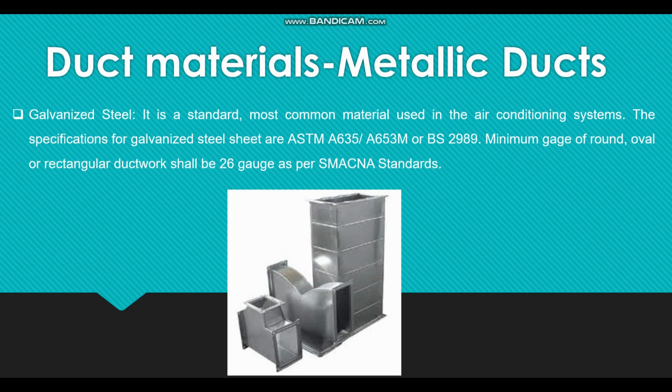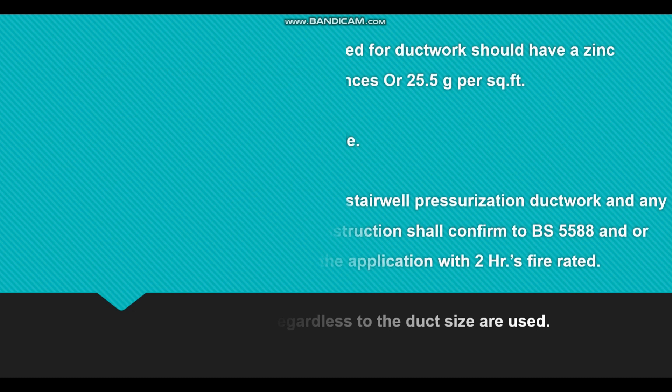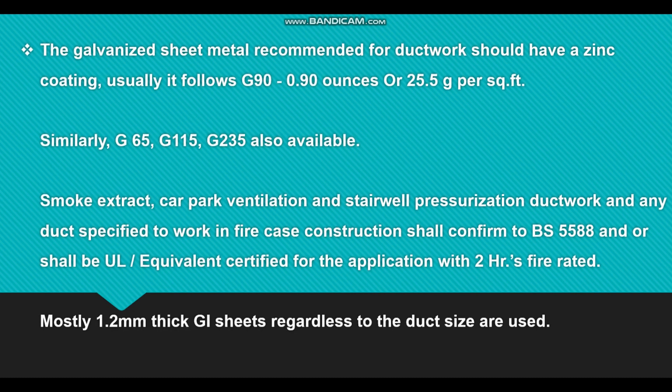This galvanized steel material is mostly used in supply, return, and all kinds of applications. The galvanized steel metal recommended for ductwork should have a zinc coating. Both inside and outside you can see the zinc coating. Usually it follows G90, which is the most common recommendation in the Middle East. G90 means 0.9 oz or 25.5 grams of zinc coating should be provided in 1 square foot of the duct.